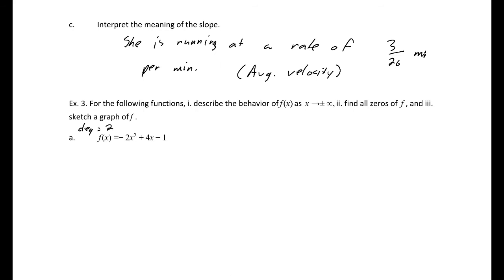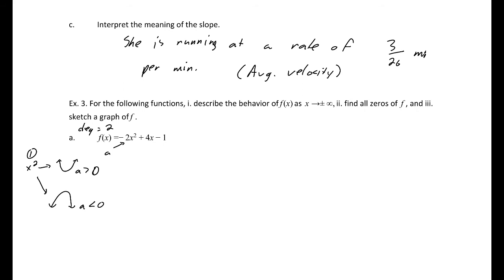Since it's an x-squared term, the graph is going to look like either a parabola opening up or a parabola opening down, depending on the a value. The a value here is negative 2. If a is greater than 0 it opens up; if a is less than 0 it opens down — so this one opens down.